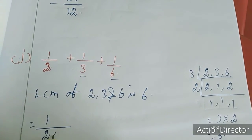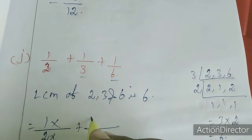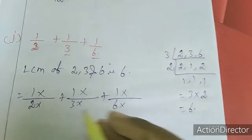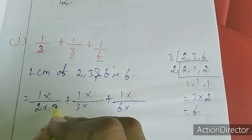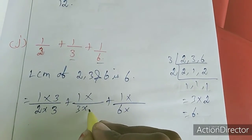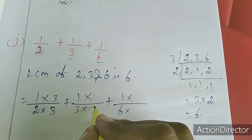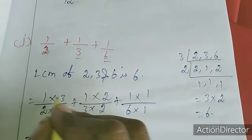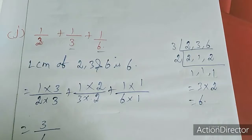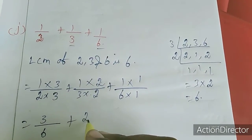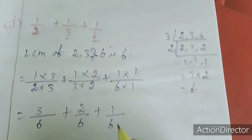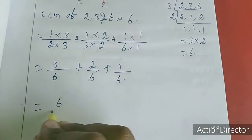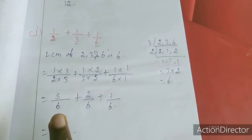So 1/2 first fraction, second fraction is 1/3, third fraction is 1/6. So 2 into which number gives 6? 3 — so up and down 3. 3 into which number gives 6? 2 — so 2. 6 into which number gives 6? 1 — so 1. That gives 3/6 plus 2/6 plus 1/6. Now I am adding: 3 plus 2 = 5, 5 plus 1 = 6. 6 by 6. This is the answer for the J sum.